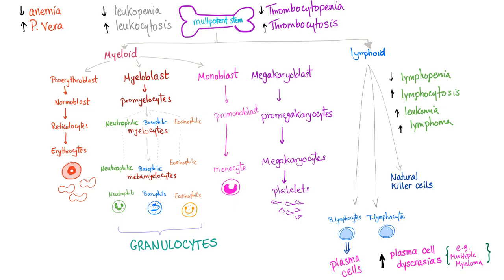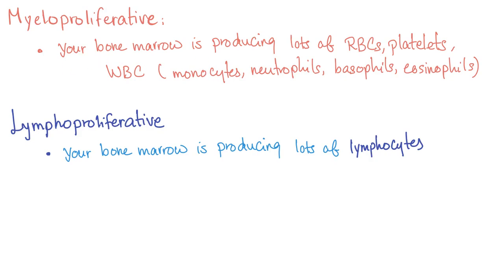What's the difference between myeloproliferative and lymphoproliferative? If any of the myeloid cells are increased, this is myeloproliferative; here we have lymphoproliferative. Myeloproliferative means your bone marrow is producing lots of red blood cells and/or platelets and/or white blood cells — such as monocytes, neutrophils, basophils, eosinophils — but not lymphocytes. Lymphoproliferative, on the other hand, means your bone marrow is producing lots of lymphocytes.